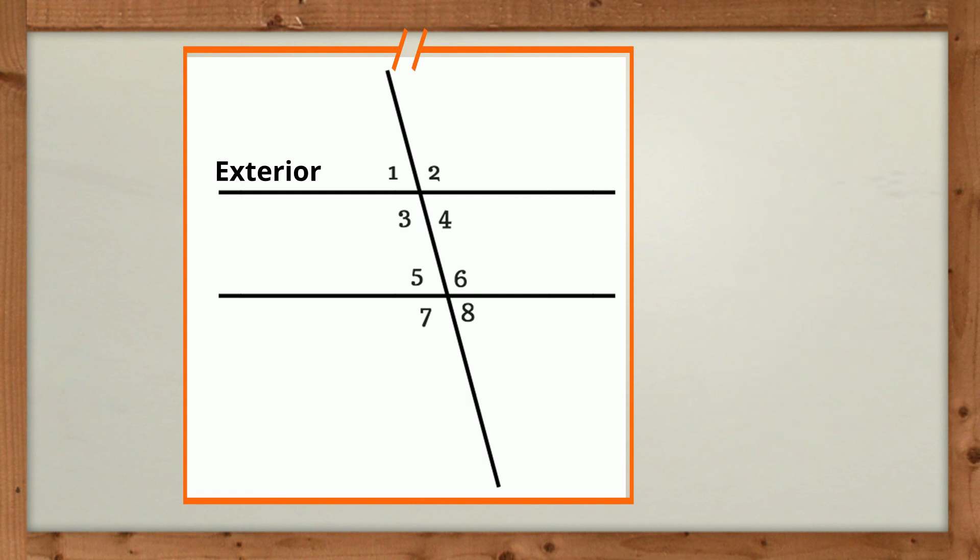Now, what if angle 1 is 60 degrees? What's the angle measure of 8? Well, they are alternate exterior and congruent, so that would be 60 degrees.